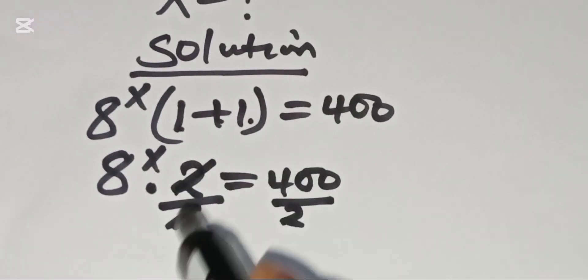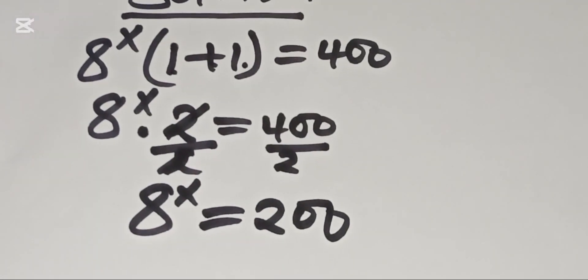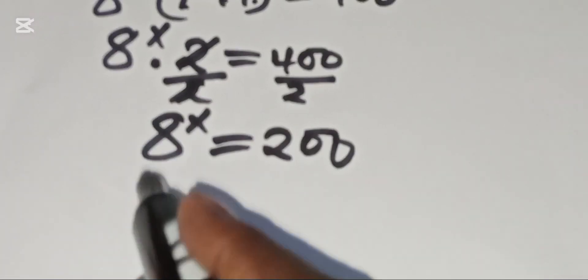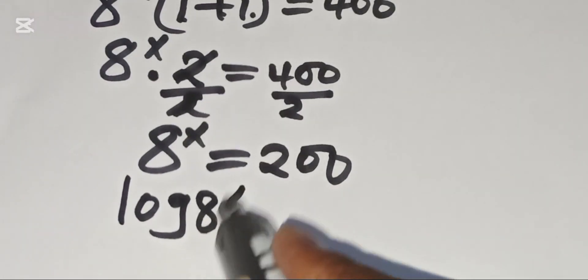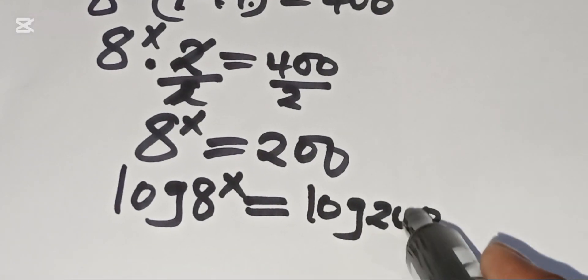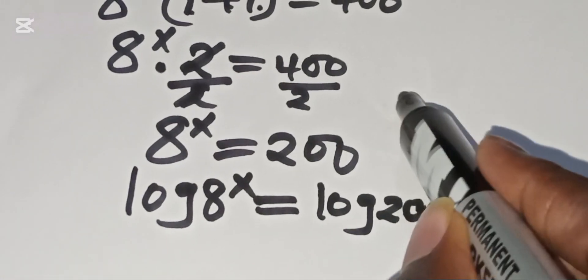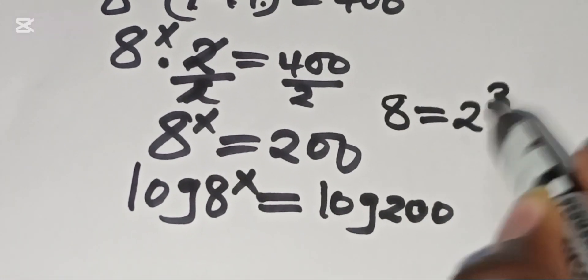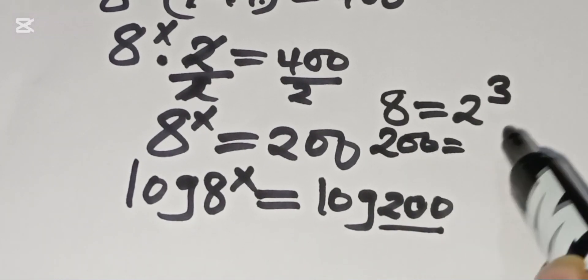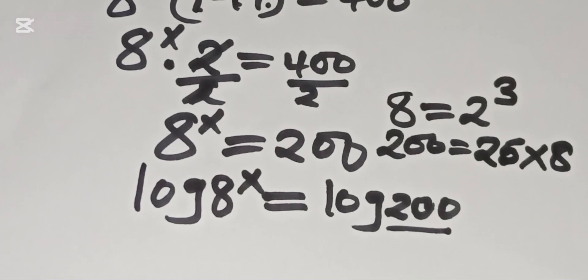From here we have 8 raised to the power x equals 200. To solve for x, we introduce the natural logarithm: log of 8^x equals log of 200. Now, 8 can be expressed as 2 raised to the power 3, and 200 can be expressed as 25 multiplied by 8.